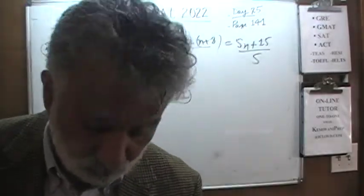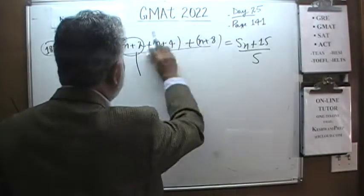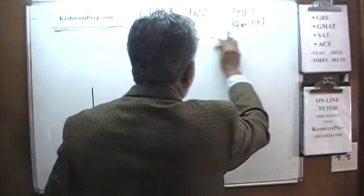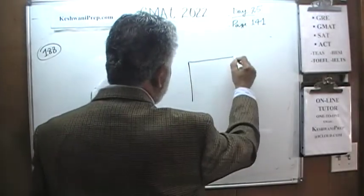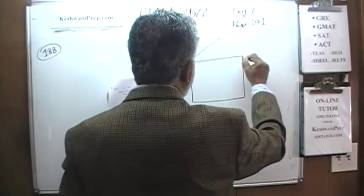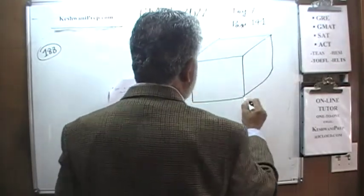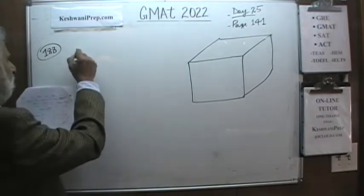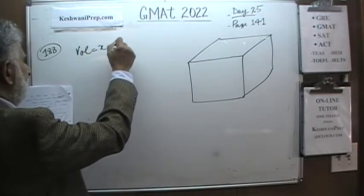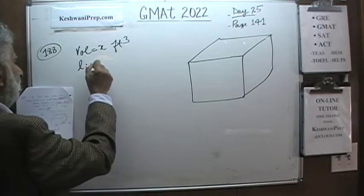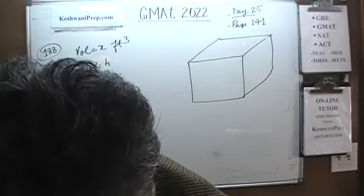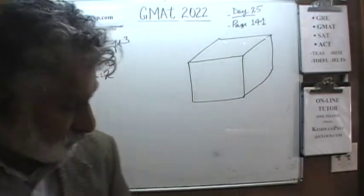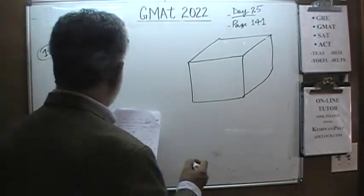Number 188 is a geometry problem. We have a rectangular box and we are told the volume is x cubic feet, and the length, width, and height are in the ratio 3 to 2 to 2. The question is: what is the height of the box?